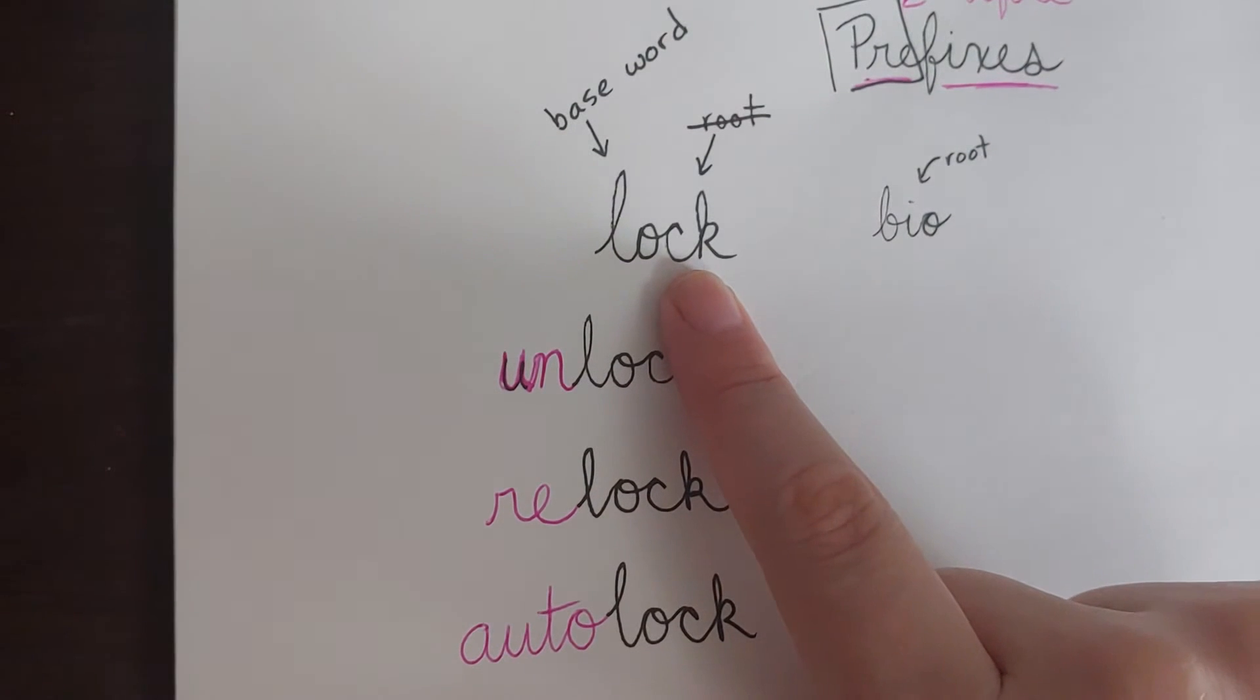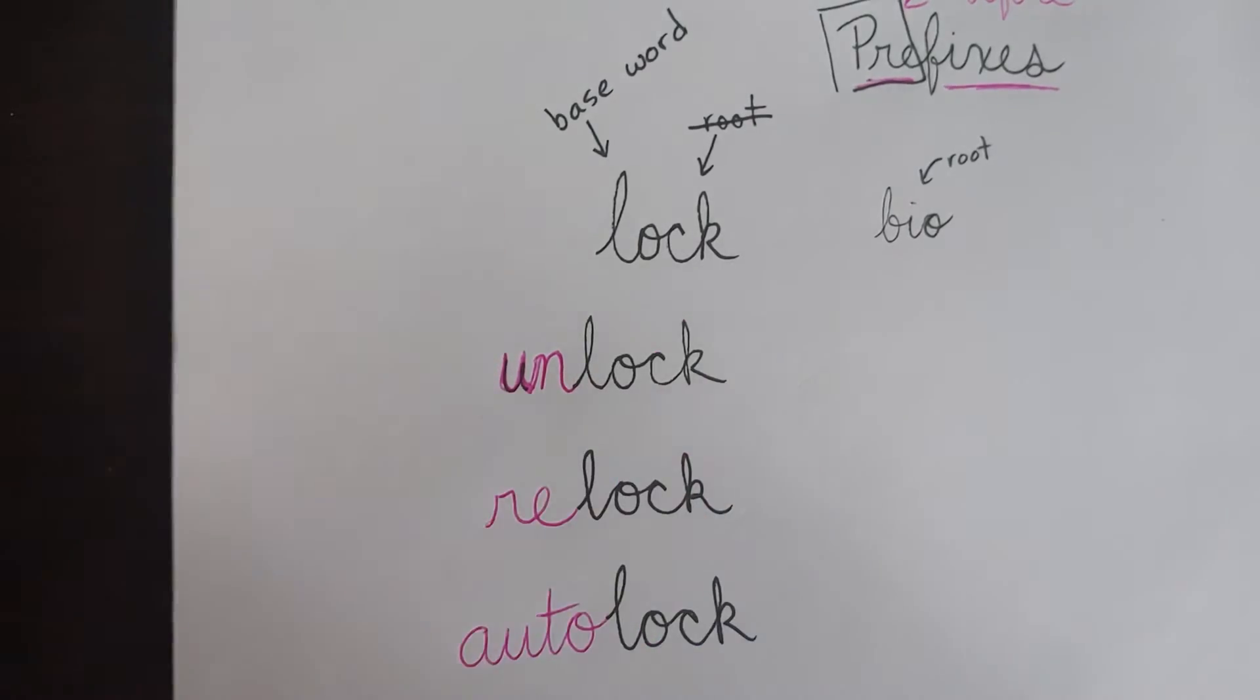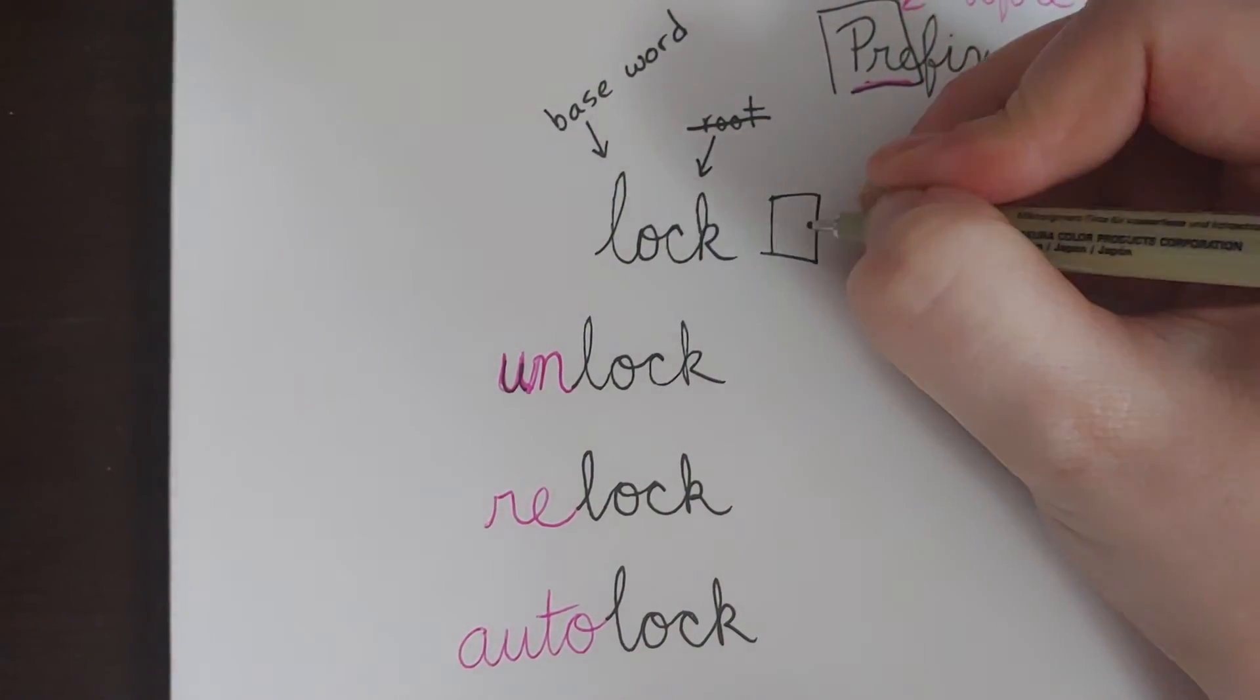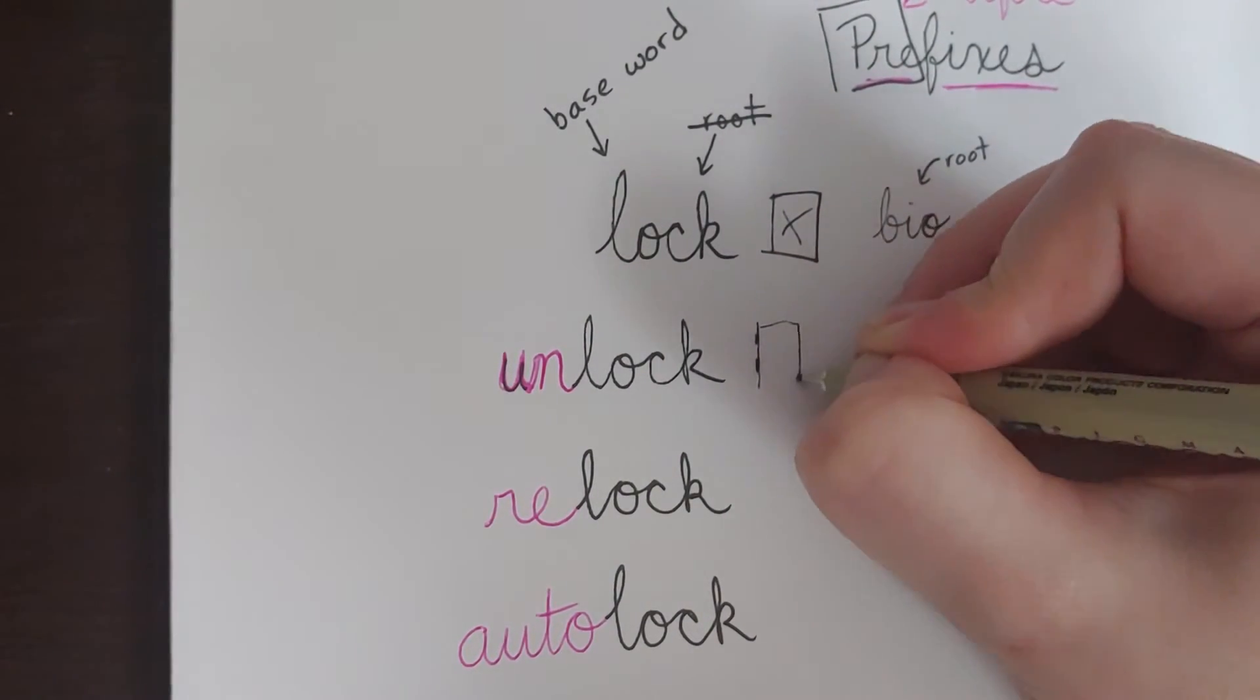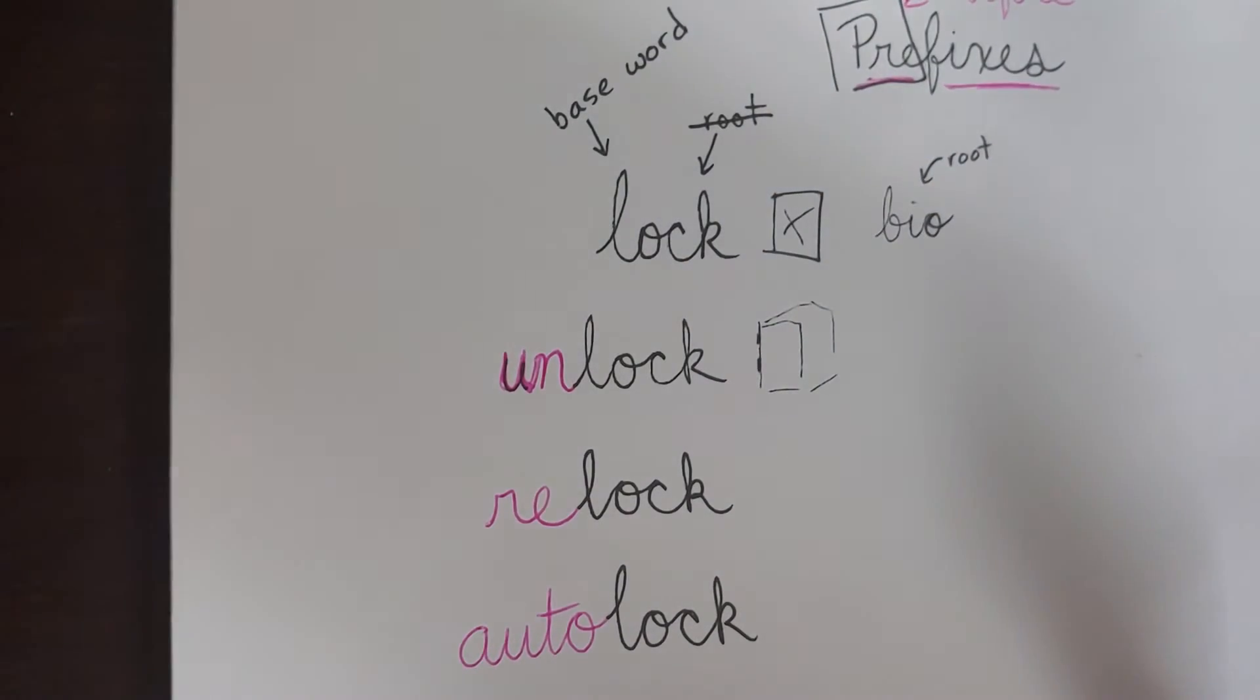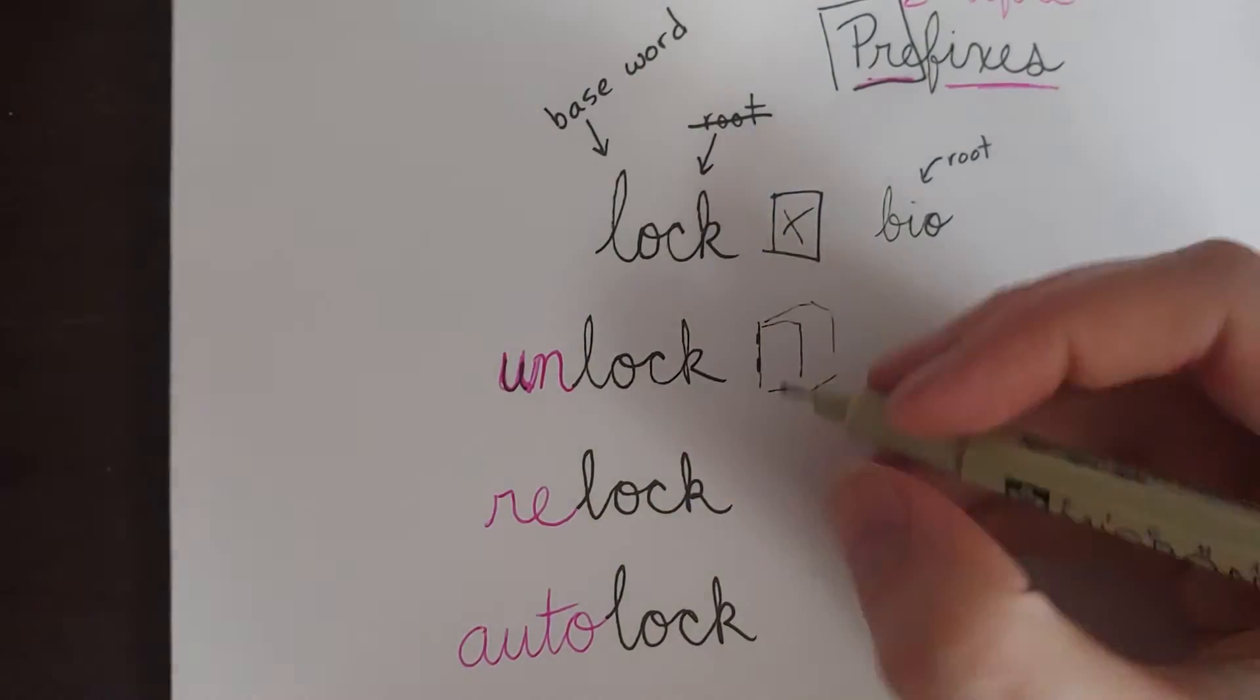So if we look at the word lock, our base, and we put the prefix un in front of it, think about that. If I say please go lock the door, then if I say please go unlock the door, then it would be able to swing open. How about if I say re-lock the door?